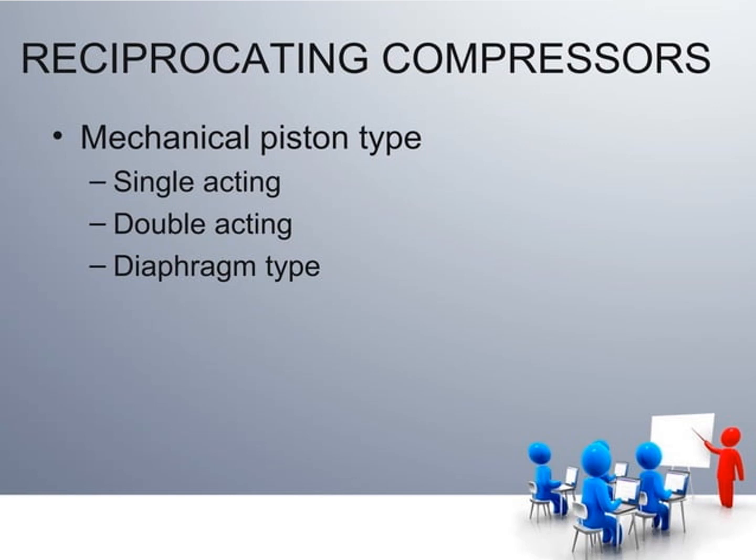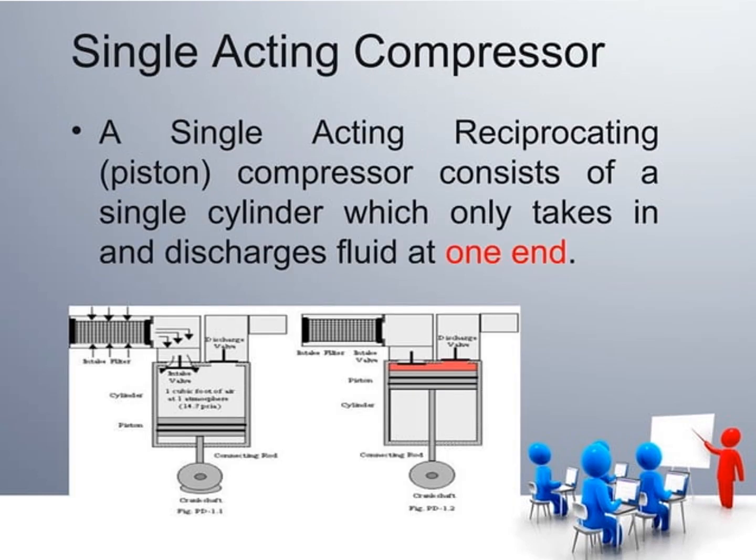Reciprocating compressors are also known as mechanical piston type. There are three types: single acting, double acting, and diaphragm type. A single acting compressor consists of a single cylinder which only takes in and discharges fluid at one end. Using the cylindrical piston method, the piston moves upward for compression and the fluid is discharged toward one end.